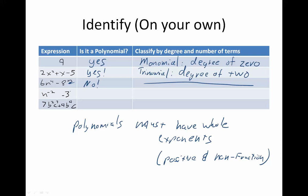n to the negative 2 minus 3. Is it a polynomial? No. Again, it has to have a positive non-fraction exponent, and that doesn't. So, there's nothing to classify.